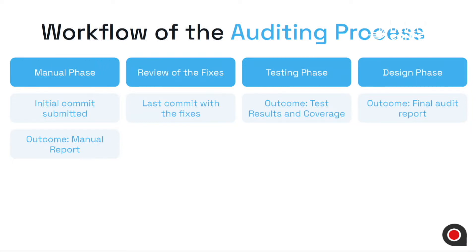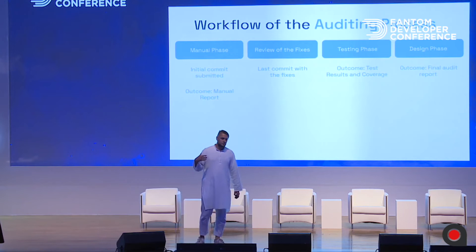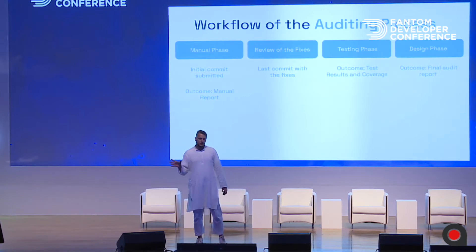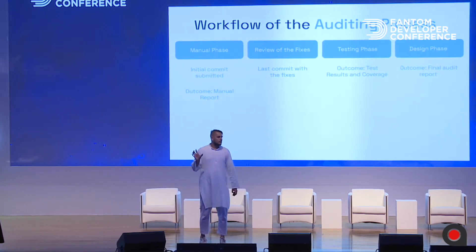We get back with the feedback, structure the issues by severity type, and then give the team enough time — basically up to them — to fix the issues we've found. To my memory, there is almost no smart contract project where we would not get back with some kind of feedback that the team would have to go back and fix.